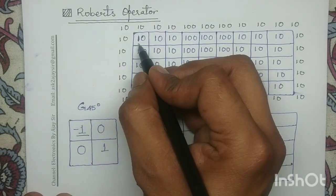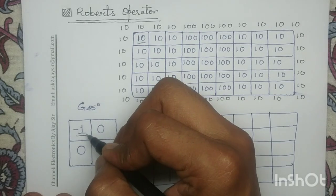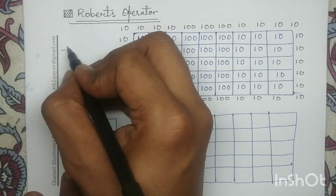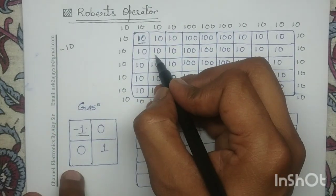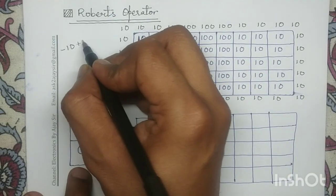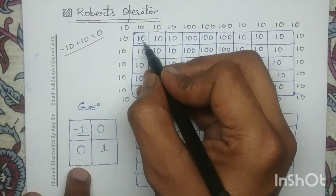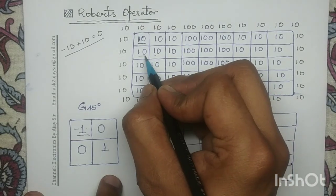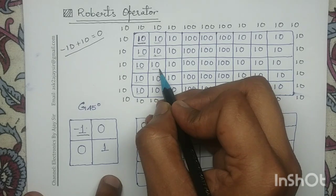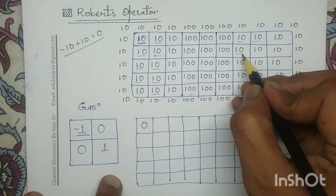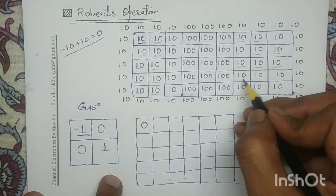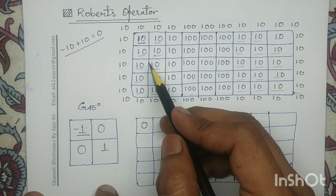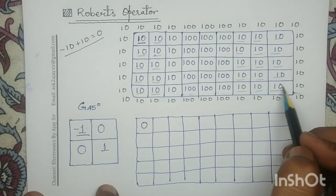First, we place the center of this mask at this pixel. This pixel value 10 will be multiplied with the coefficient minus 1, and its diagonal element will be multiplied with coefficient 1. So minus 10 plus 10 gives a response of 0. In the similar way, for these pixels you get the same response: minus 10 plus 10, equal to 0.